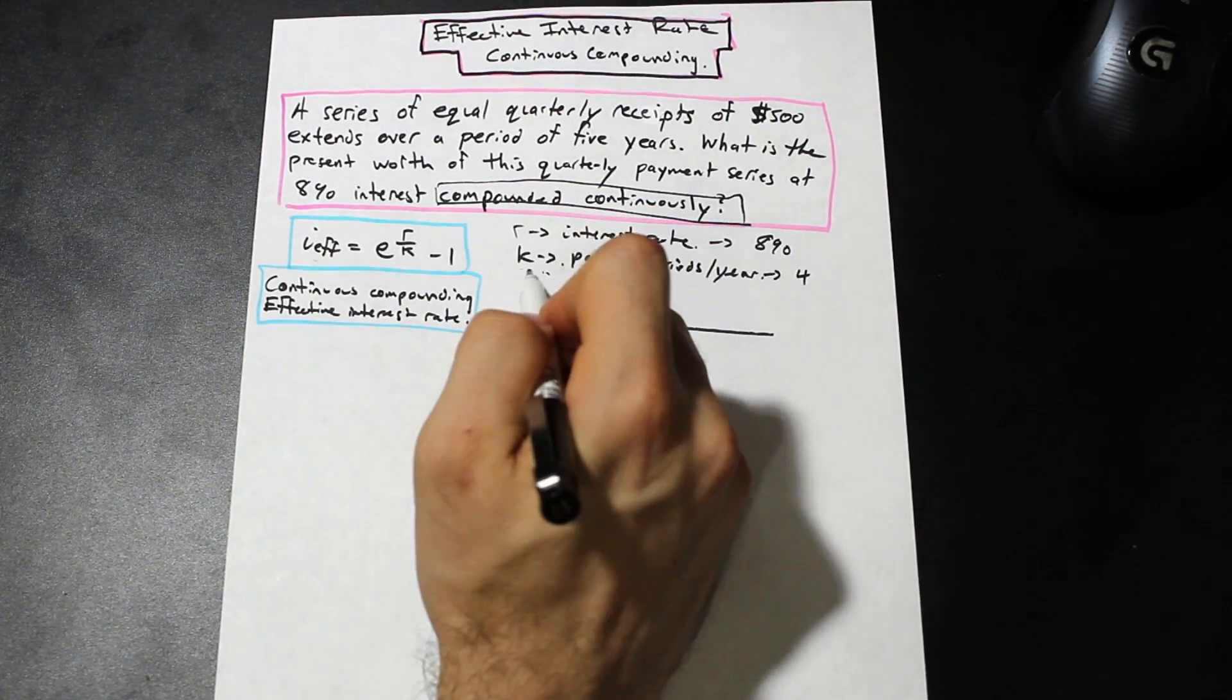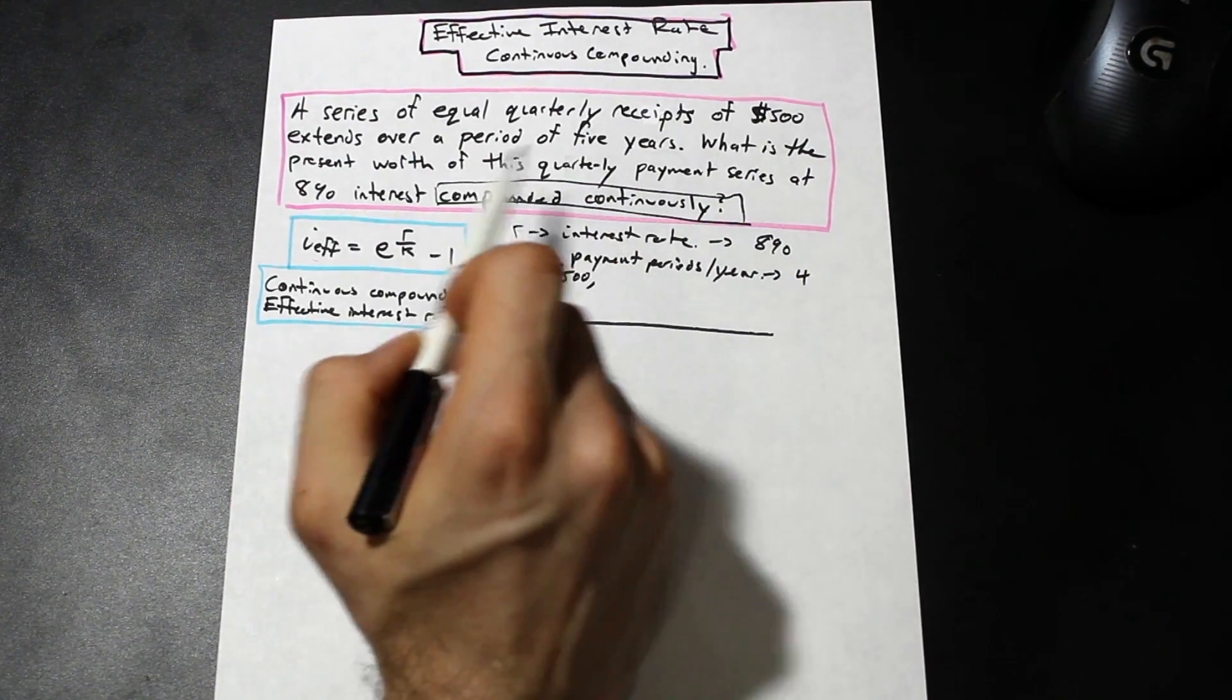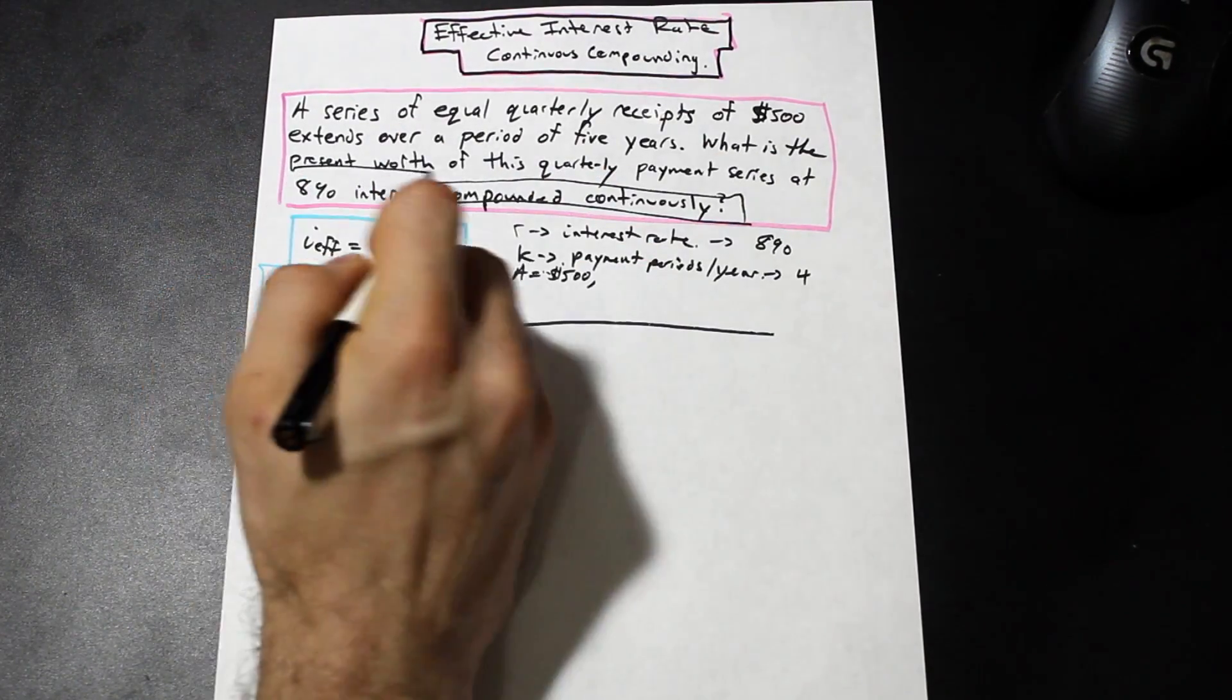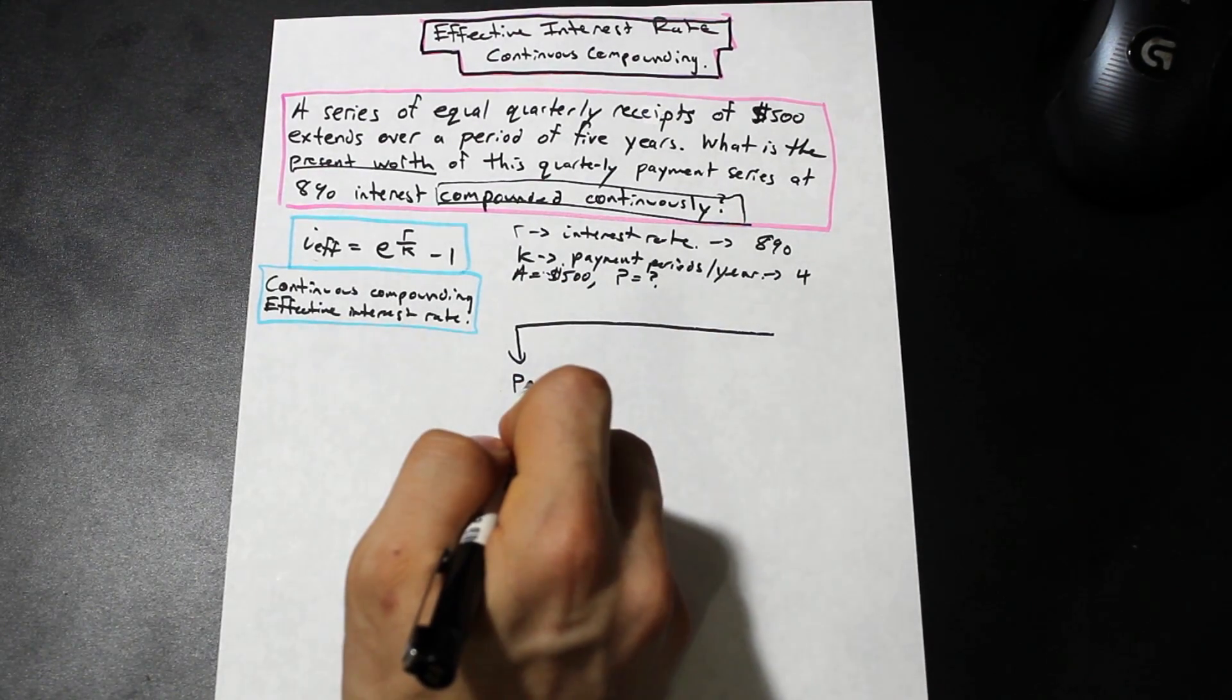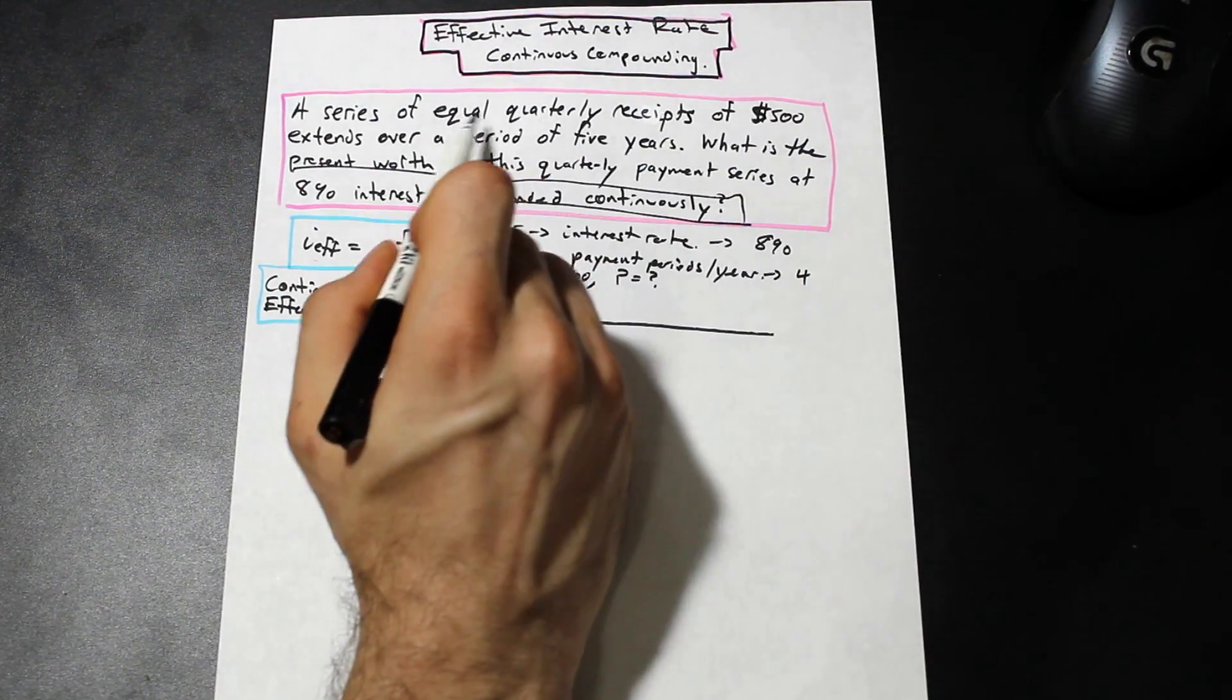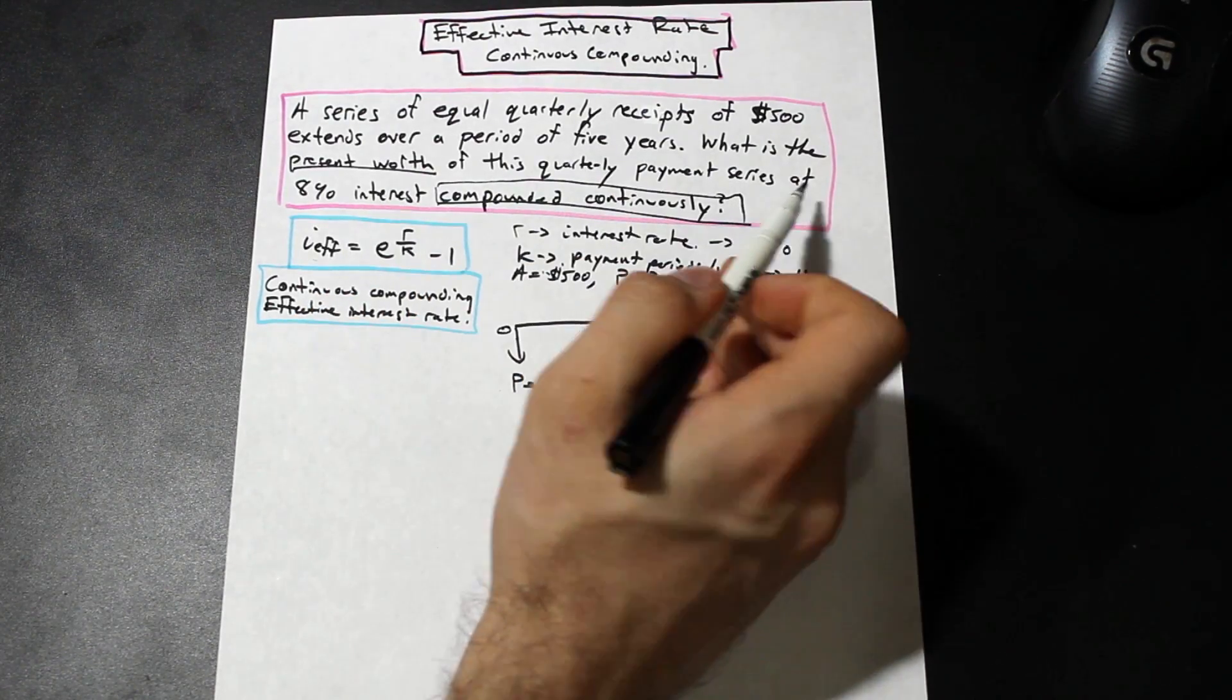So we know there's going to be an A value in there. We have A and that's equal to $500. Those are our payments. And what is the question asking us for? It's asking us to find the present worth. What is the present worth? So we want to find P. We're in the present at n equals zero, and we want to know what this series of quarterly payments at $500 compounded continuously for a period of five years is.